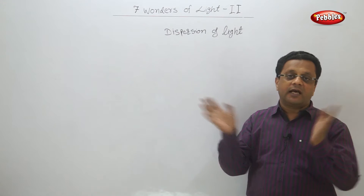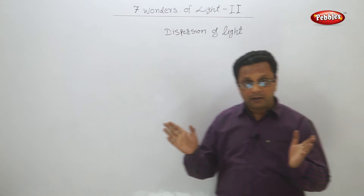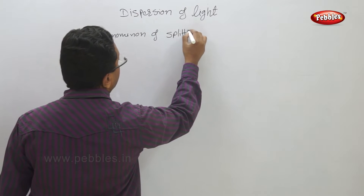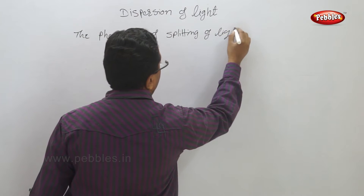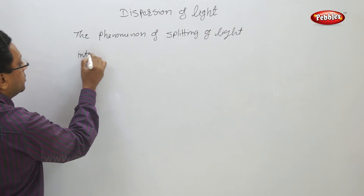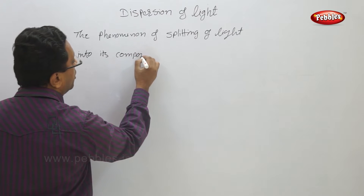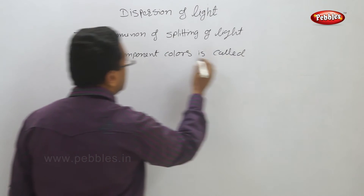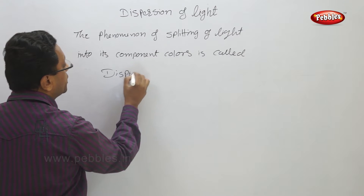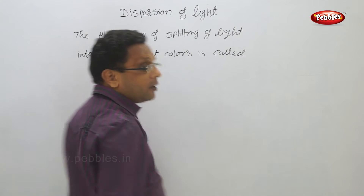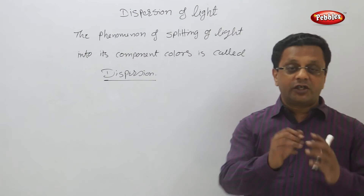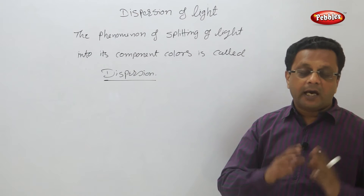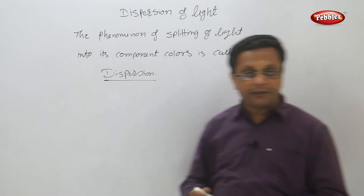The splitting of light into its component colors is called dispersion. Note that I have not written here the definition as per the book, but whenever you write definitions it must be word by word as per the book. Here I am just writing the points.